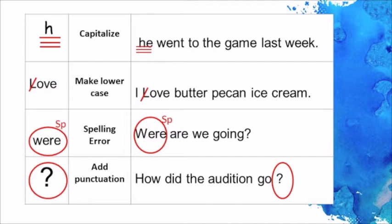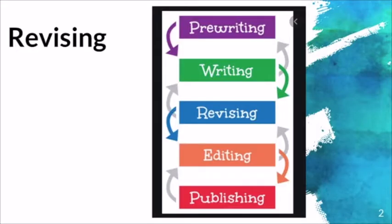Lastly, we have add punctuation. This is obviously a question: 'How did the audition go?' I didn't have any punctuation, so I needed to add a question mark. When you are working, make sure you add the appropriate punctuation to the sentence.